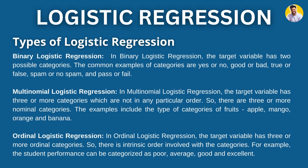What are the different types of logistic regression? Logistic regression is of three types: binary, multinomial, and ordinal. Binary covers true/false, good/bad, yes/no, spam or not spam — these are binary target variables. Multinomial covers multiple categories such as types of fruits or types of vegetables — different categories we add in multinomial logistic regression. Ordinal covers performance-based category values like poor, average, good, and excellent. If we have to predict this kind of problem statement, we apply ordinal logistic regression.